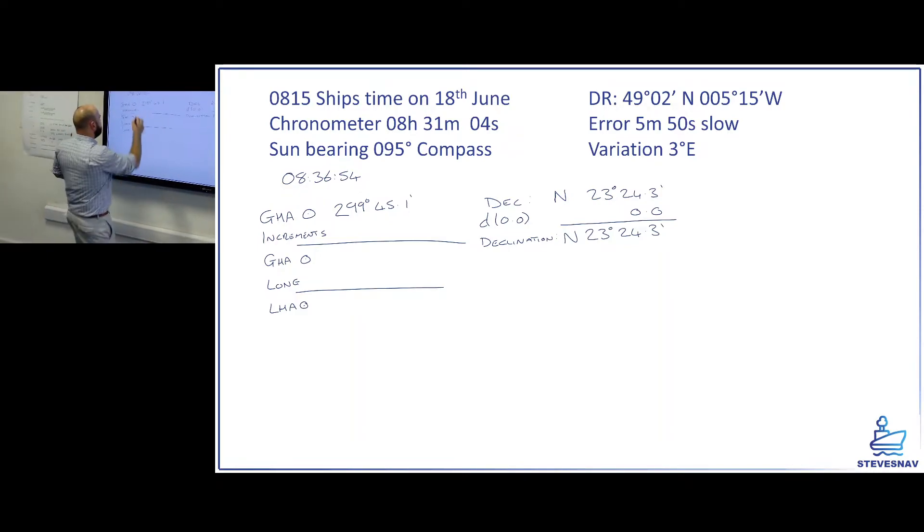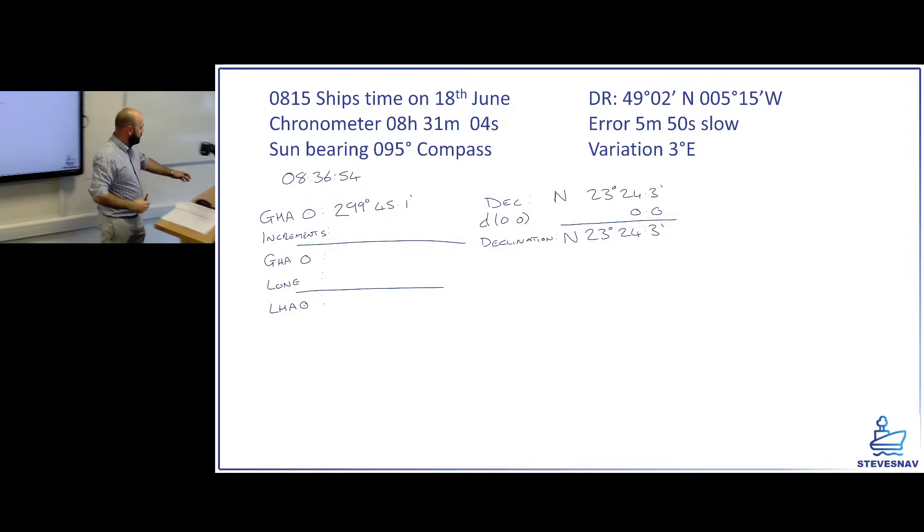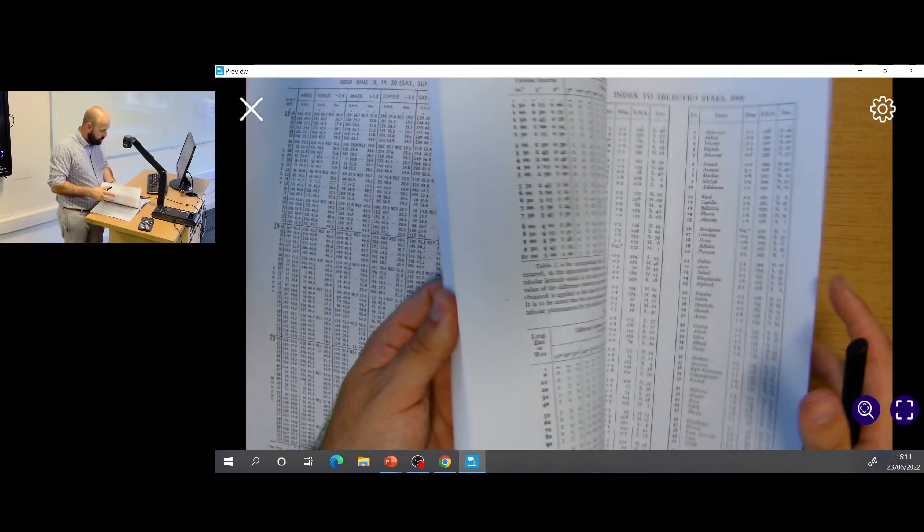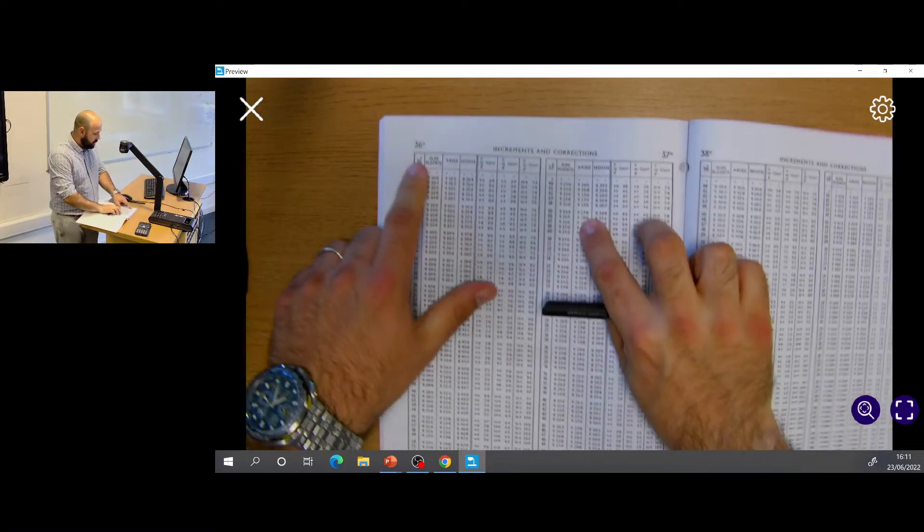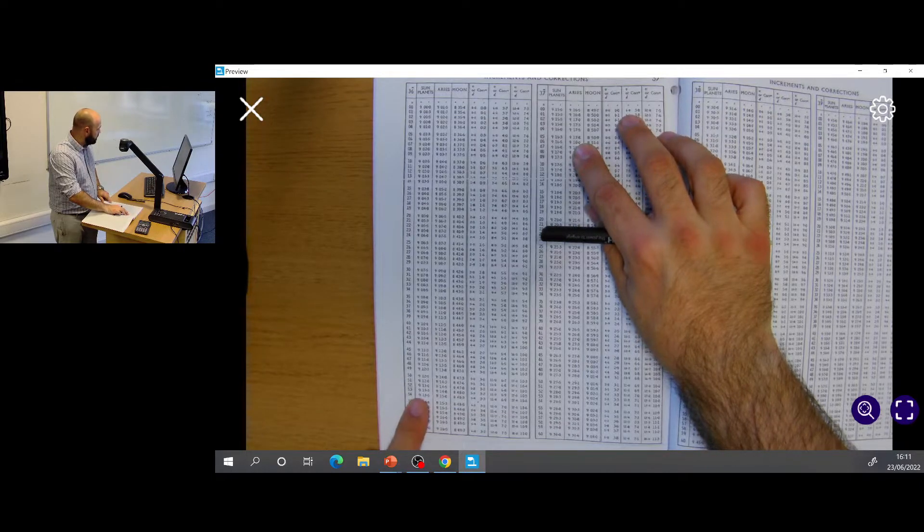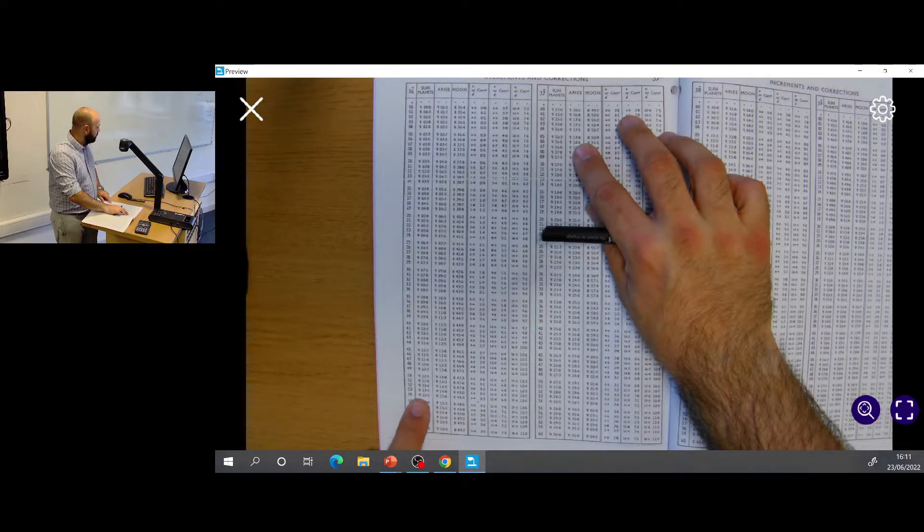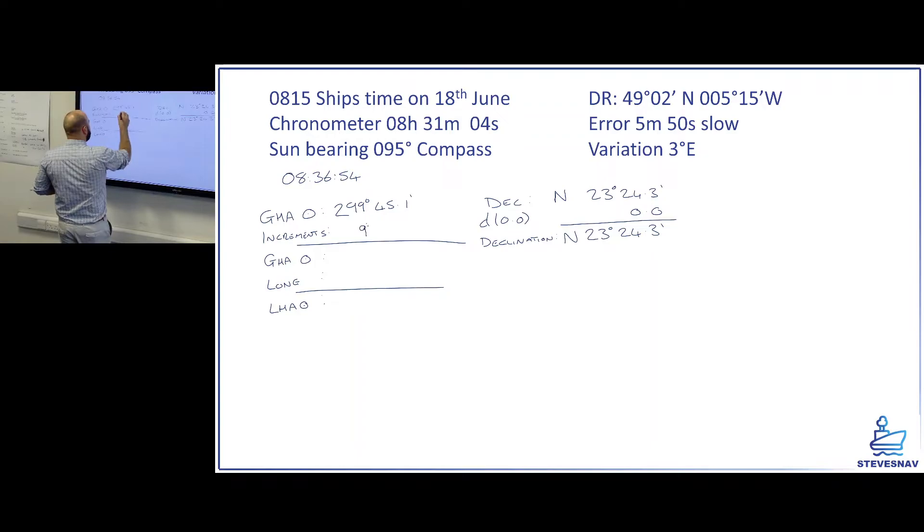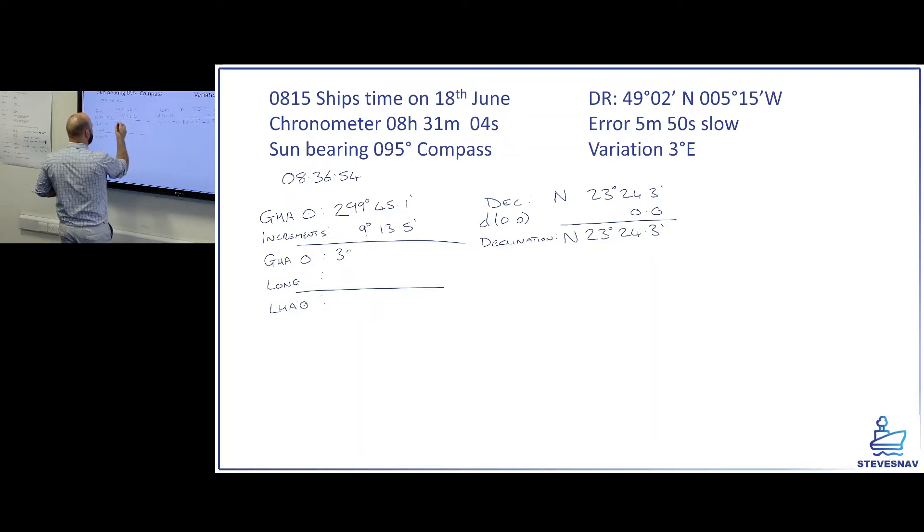Now my increments, I now need to go back into my almanac again to get there. So I'm going to go back into my almanac and have a look in said almanac at the back. I want 36 minutes and 54 seconds. So I took the 36 minutes page at the back. Sun for 54 seconds was 9 degrees 13.5 minutes. So that's going to be 308 degrees 58.6 minutes.